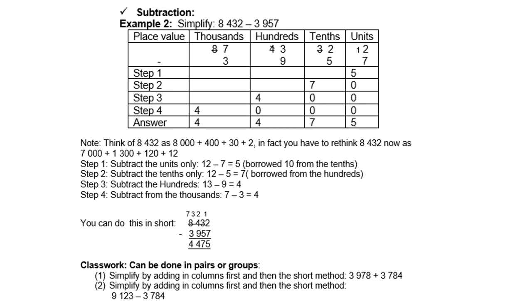Let's do subtraction: 8,432 minus 3,957. Again here, we need to be very careful when we subtract. If you look at the thousands, if you add them all up, you get 8,432, and so forth.